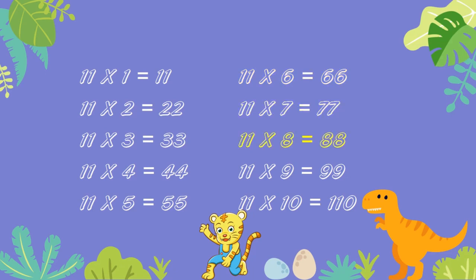11 eights are 88. 11 nines are 99. 11 tens are 110.